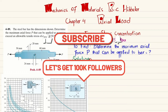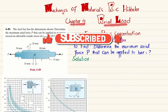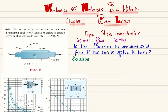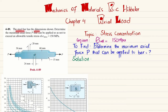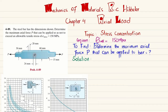Welcome back. In this video we are going to solve problem 4-89, taken from chapter 4 on axial load. The book is Mechanics of Materials by RC Hibbeler, and this comes under the topic of stress concentration. The problem states: the steel bar has the dimensions shown — determine the maximum axial force P that can be applied so as not to exceed an allowable tensile stress of 150 MPa. There is a hole of diameter 24 mm and a fillet radius of 15 mm.